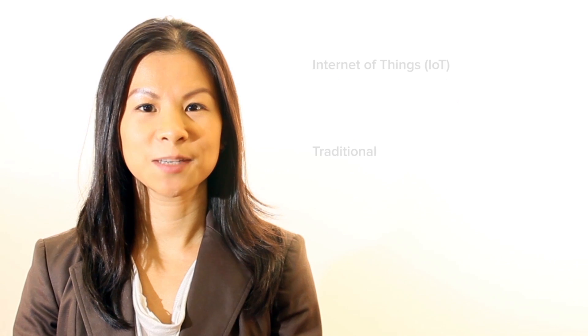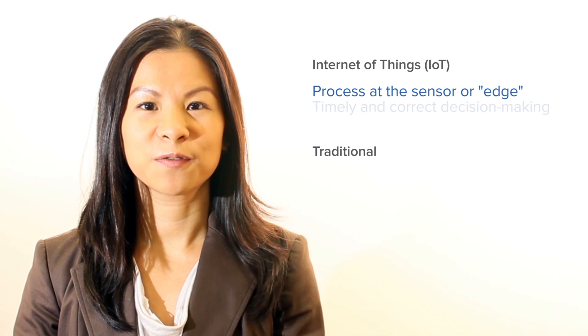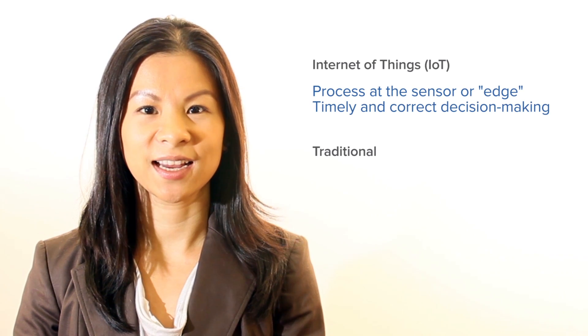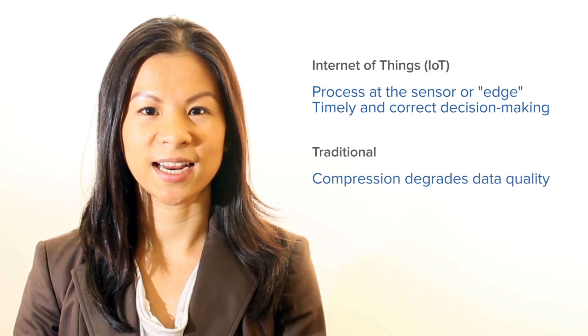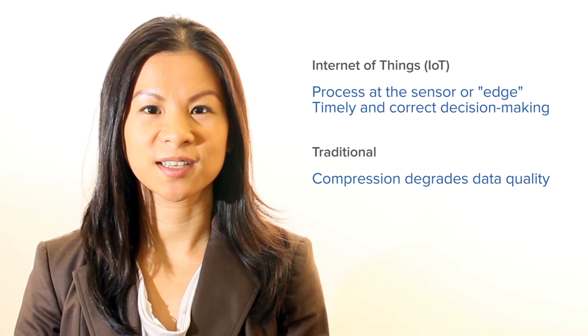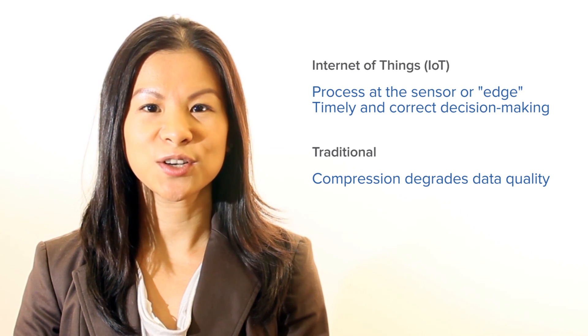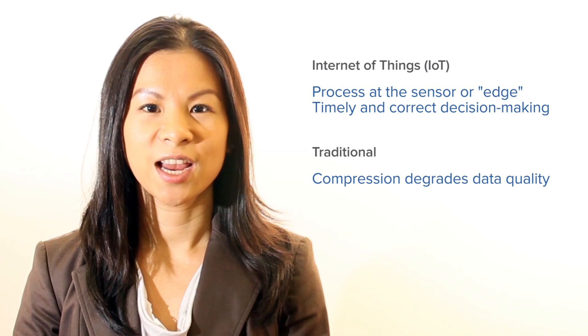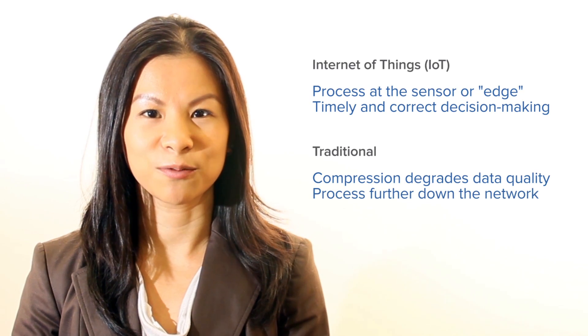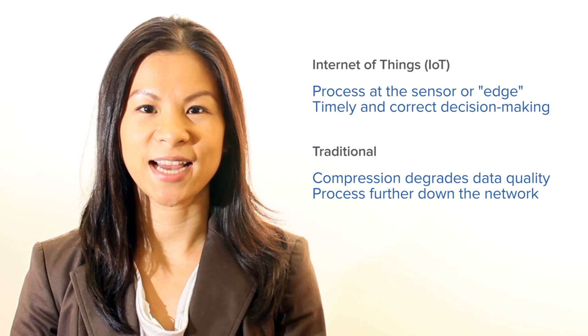In this space, the ability to perform image processing at the sensor or edge is critical for timely and correct decision-making. Compression degrades data quality and impacts decision-making time and quality. This problem becomes larger in networks where object data from multiple sensors require processing. Traditional image processing architectures in which processing is done further down the network prevents the timely decision-making capability required in IoT applications.